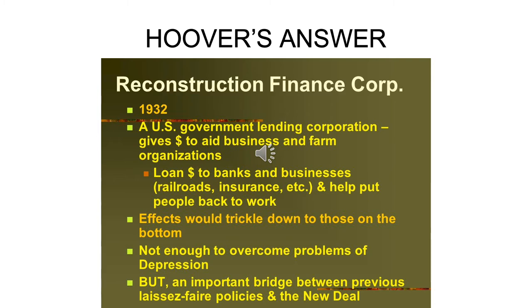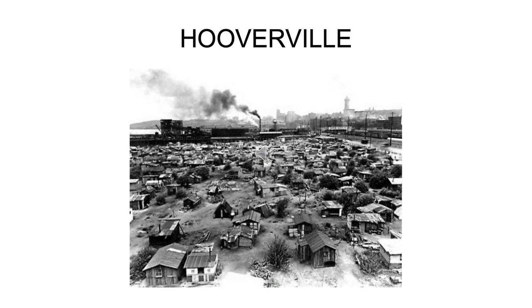Hoover took some measures — he just was not willing to go far enough. As a result, in the minds of the public, Hoover was to blame. That was unfair. Presidents who are in office when an economic recession happens usually get the blame, but most of the time it is something that happened before they became president that set events in motion. That's the way it was for Hoover. But between his bad public relations and it happening on his watch, he became the villain of the Great Depression.